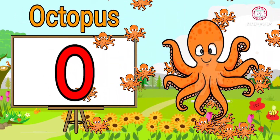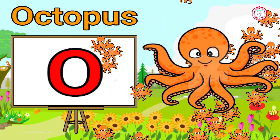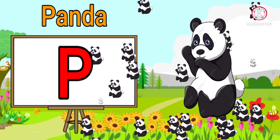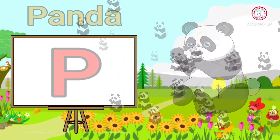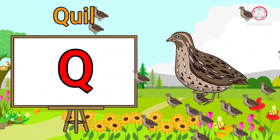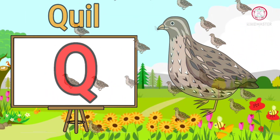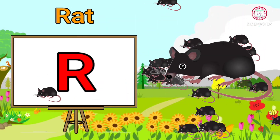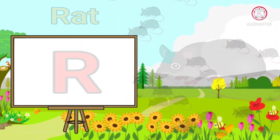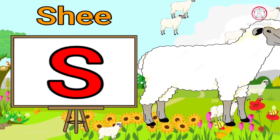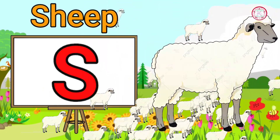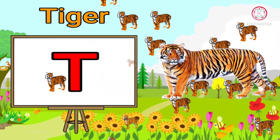O for octopus. P for panda. Q for quail. R for red. S for sheep.